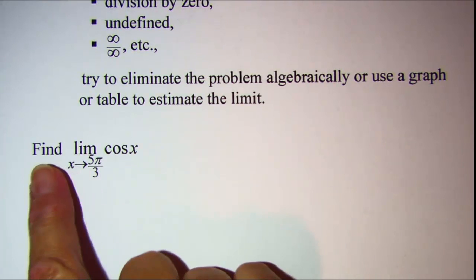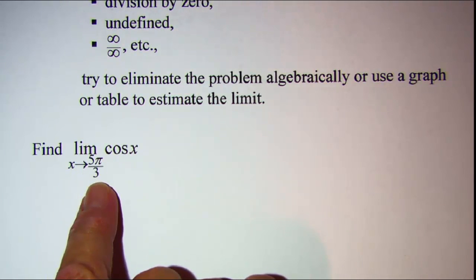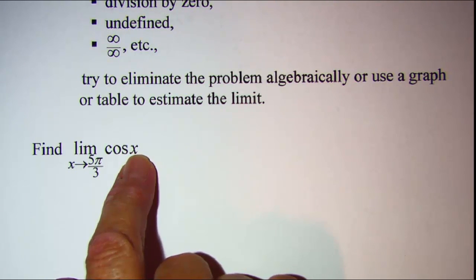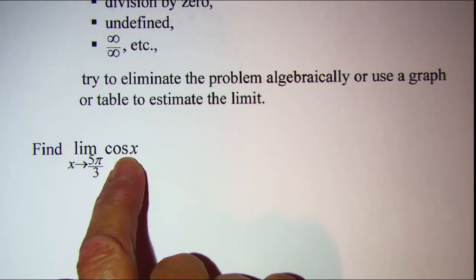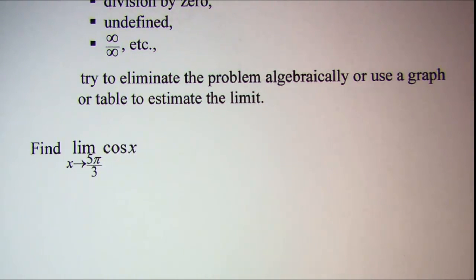The problem we'll be working on is to find the limit as x approaches 5π/3 of cosine x. We know that the cosine function is continuous everywhere, so there's no place where we would run into the problem of division by zero or undefined function.